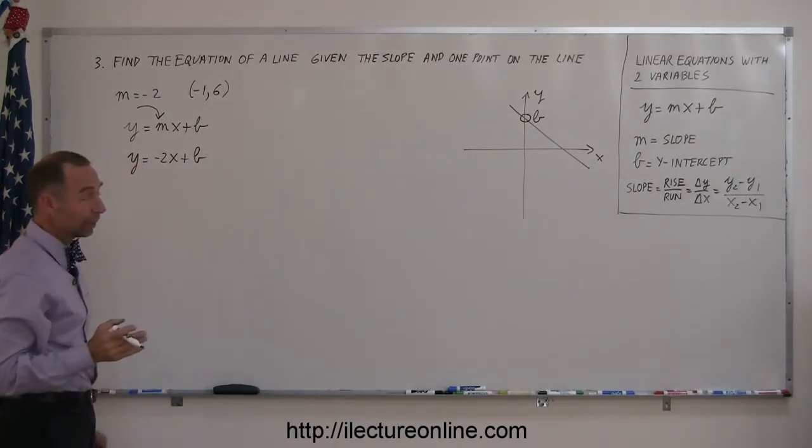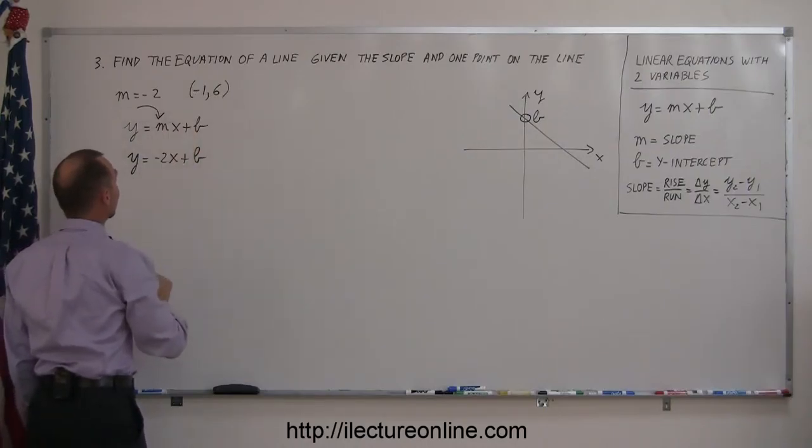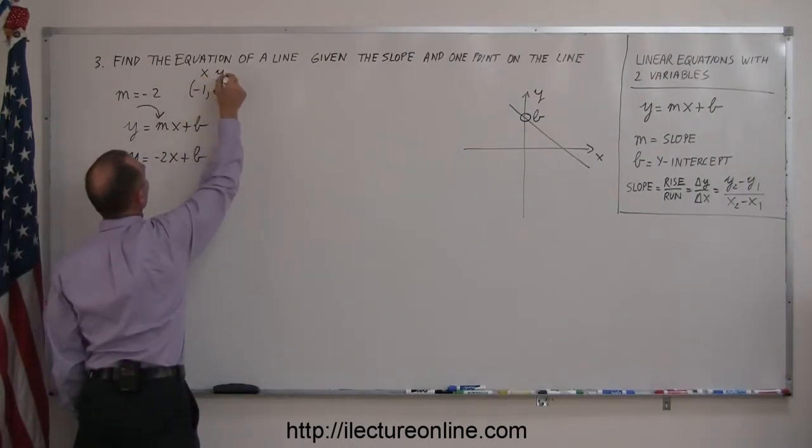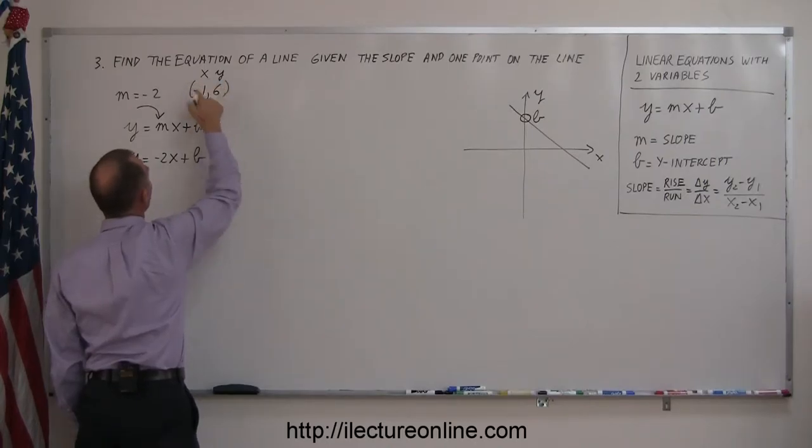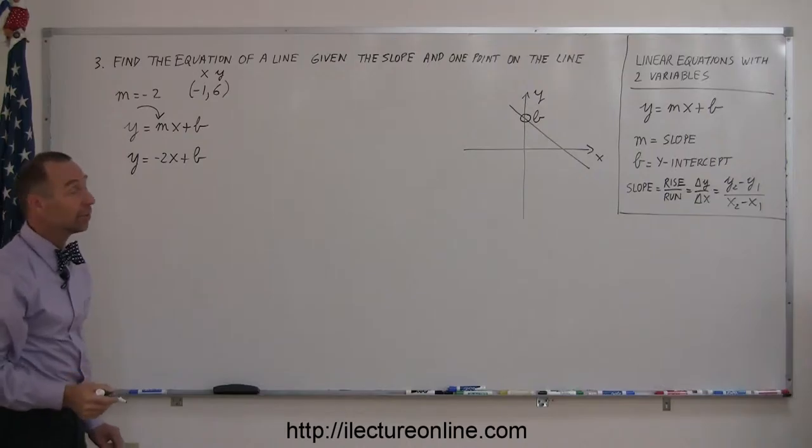The way to do that is to realize, well, they have given me a point on the line, negative 1 and 6. So this is your x-value, this is your y-value, so if you plug this x and y-value in your y and x here, you can then solve for b.